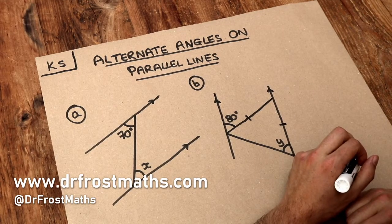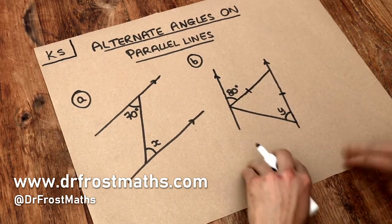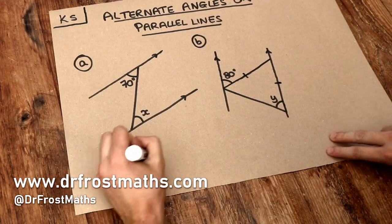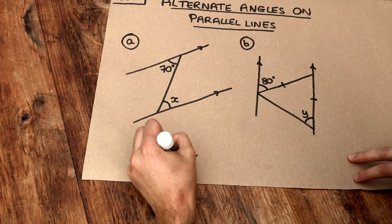Hello and welcome to this Dr. Ross Maths key skill video on alternate angles on parallel lines. We have alternate angles when we have a Z shape, where the lines at either end of the Z are parallel to each other.